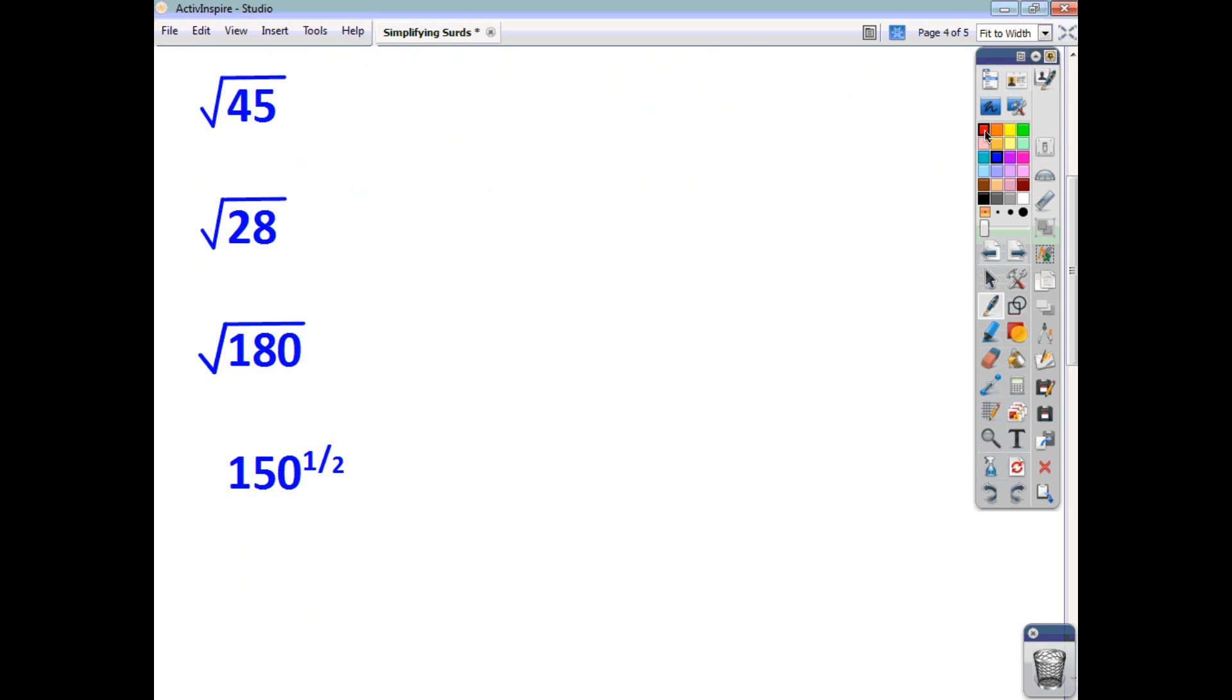Now, root 45. Straightforward enough. We can take out root 9. Break it down as 9 times 5. So it's the same as root 9 times root 5. Root 9 is 3. So the answer is 3 root 5.